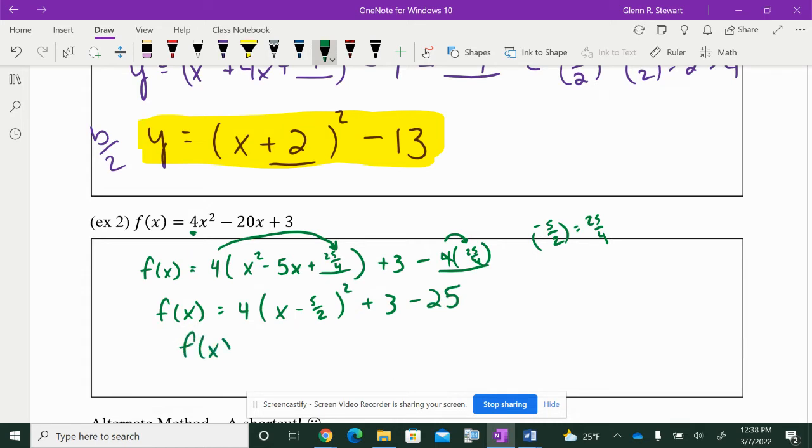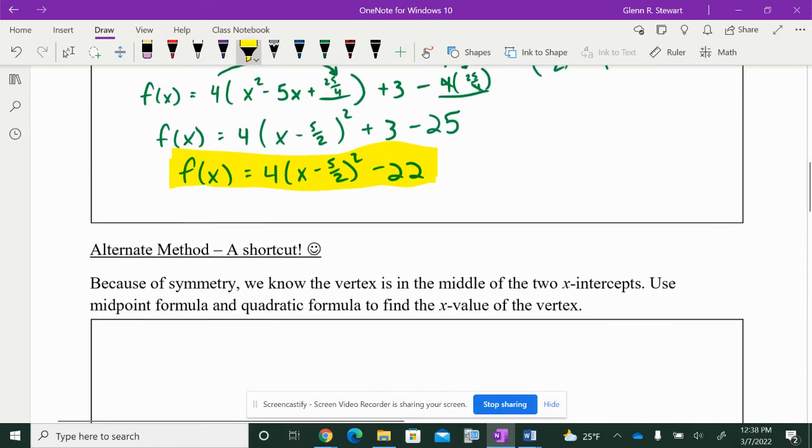Now, f of x is equal to 4 times x minus 5 over 2 squared, minus 22. And now we have my vertex of 5 halves, comma, negative 22.